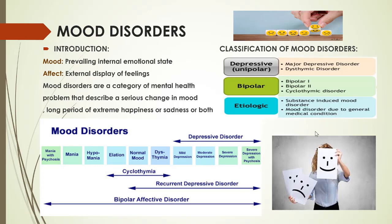There is some classification of mood disorders. Number one: depressive unipolar, which includes major depressive disorder and dysthymic disorder. Number two: bipolar, which includes bipolar 1, bipolar 2, and cyclothymic disorder. Number three: etiologic, which includes substance-induced mood disorders and mood disorders due to general medical conditions.